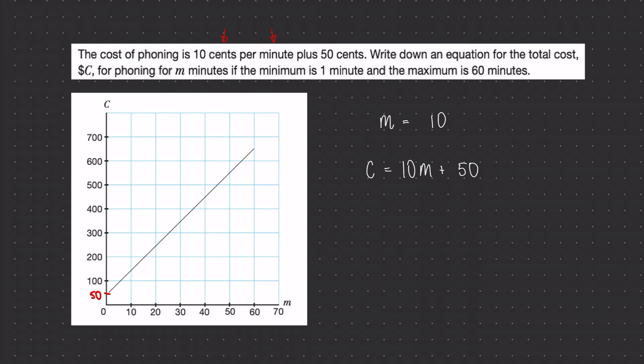So let's have a look at the second part of the question. It's asking us what is the total cost for phoning between one minute and 60 minutes, so a minimum and a maximum value there. First let's work out the cost of phoning for one minute. We're going to do 10 times 1 plus 50 which is going to be 60 cents.